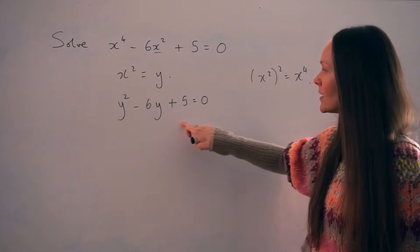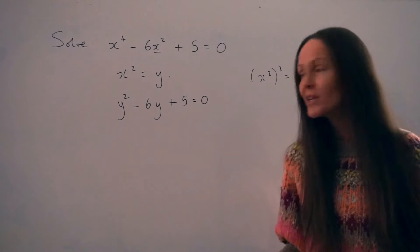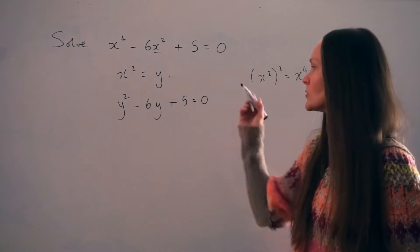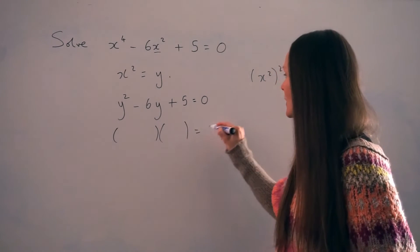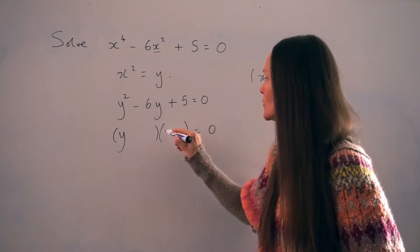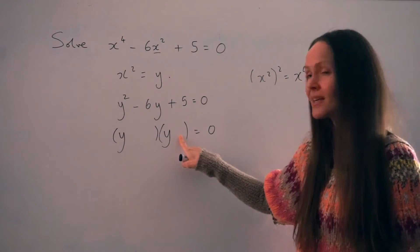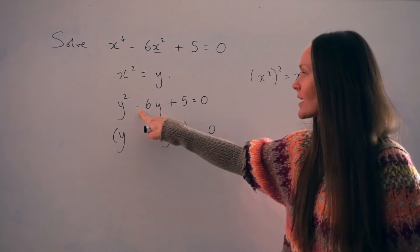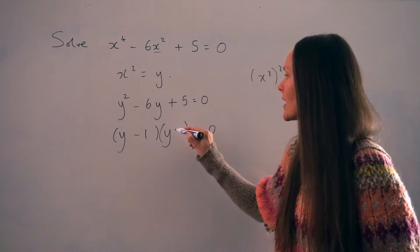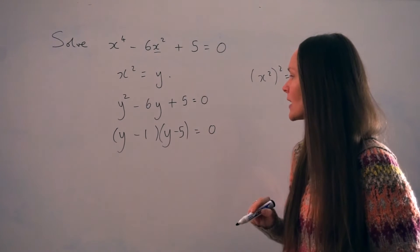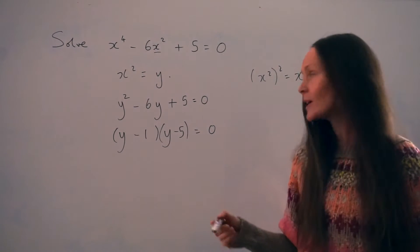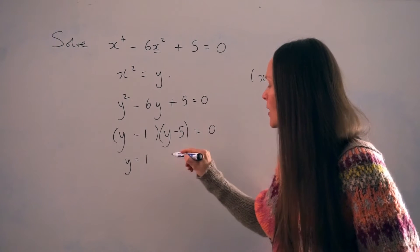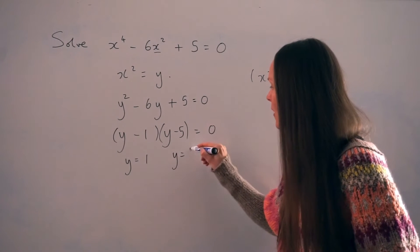So now we have a nice simple quadratic equation to solve. This one can be factorized. These two numbers inside the brackets have to multiply to give positive 5 and add to give negative 6, so this should be negative 1 and negative 5. If I'm solving this equation to work out the values of y, the two y values should be positive 1 and positive 5.